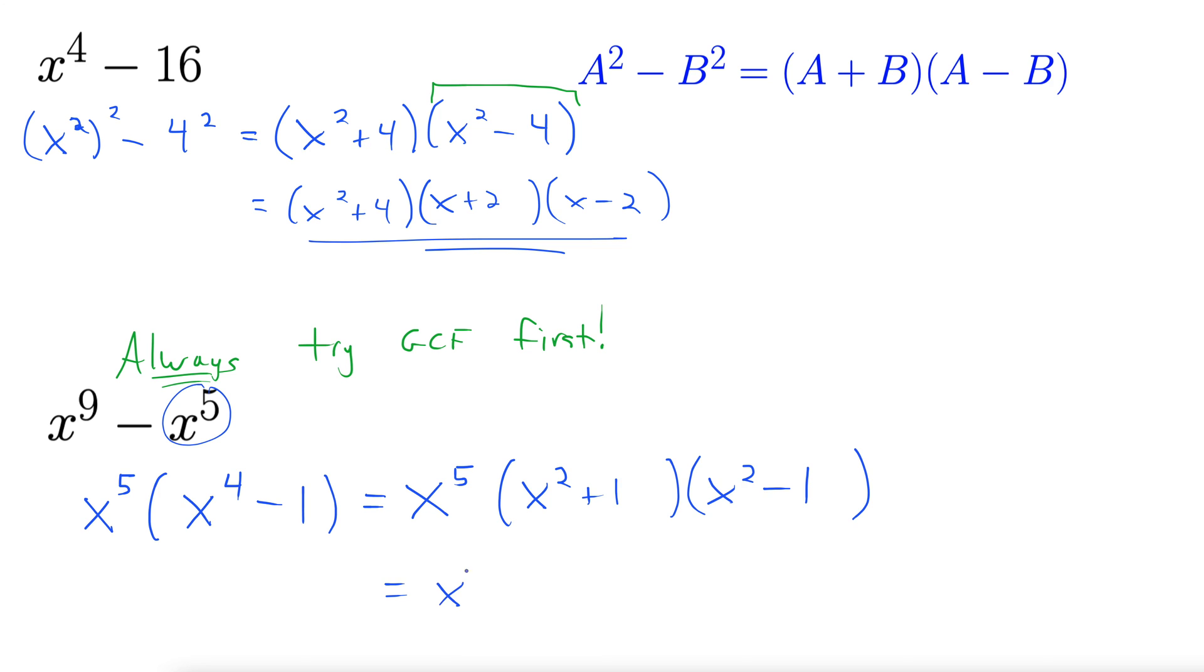But then notice that x squared plus 1 is prime, but x squared minus 1 can get factored even further down to x plus 1, x minus 1. There's our final factored form.